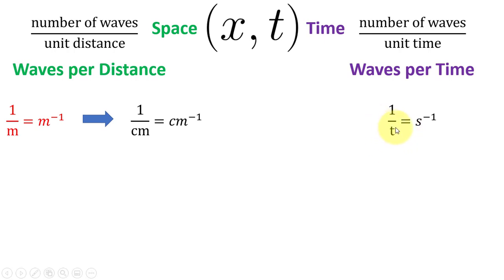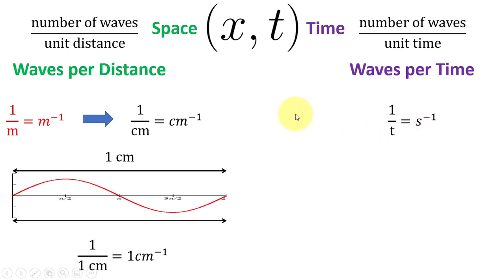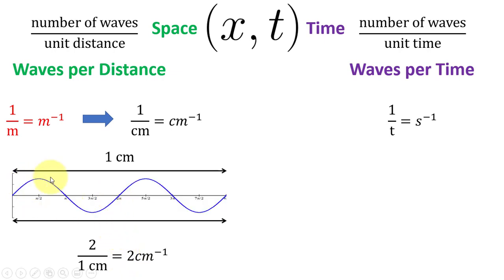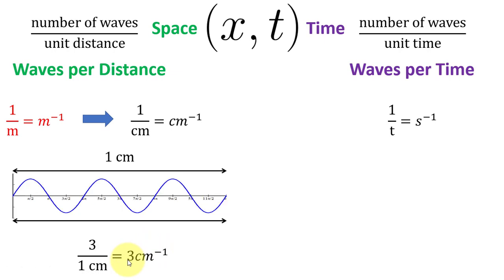To understand wave number, freeze time and consider 1 centimeter length. If there is 1 wave in 1 cm, the wave number is 1 cm⁻¹. If there are 2 waves, the spatial frequency is 2 cm⁻¹. If there are 3 waves, the wave number is 3 cm⁻¹.